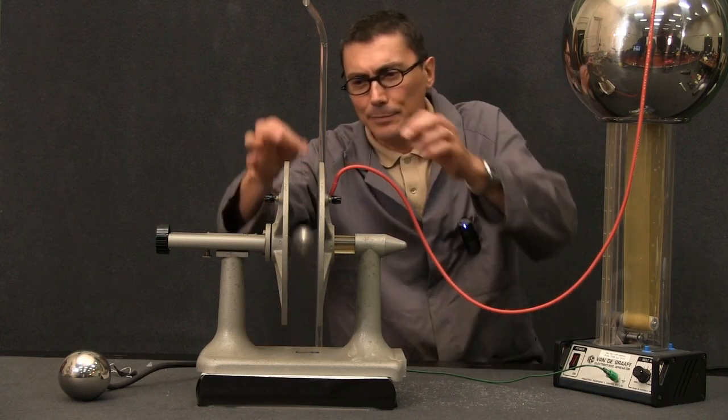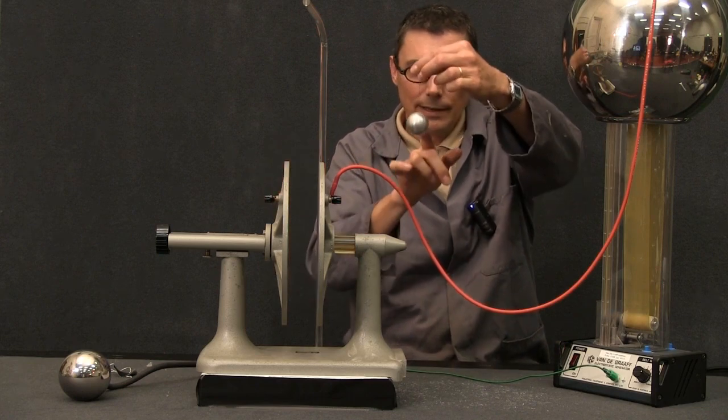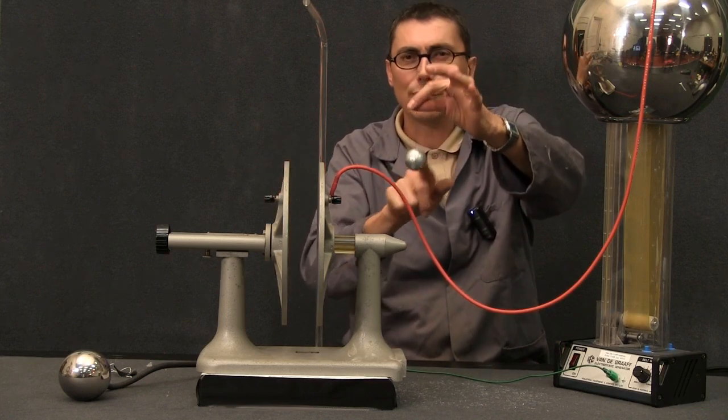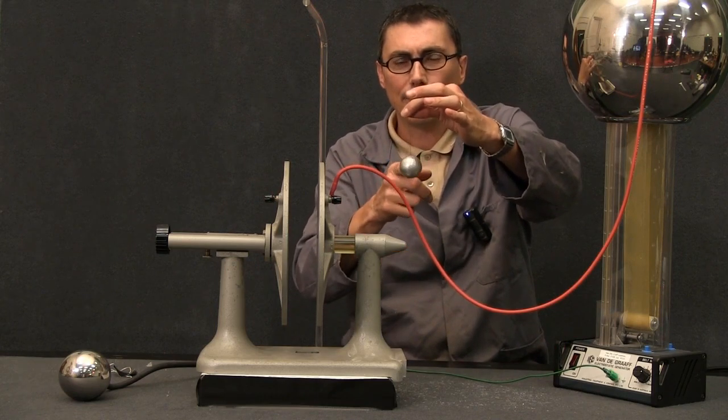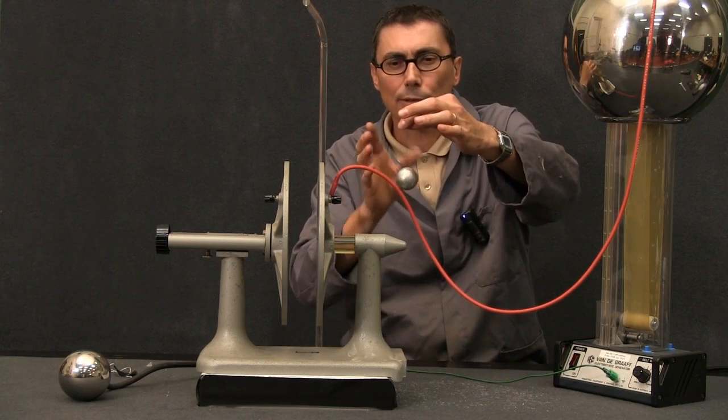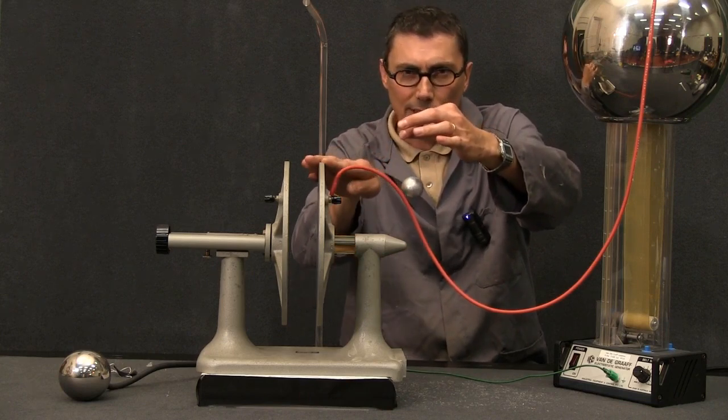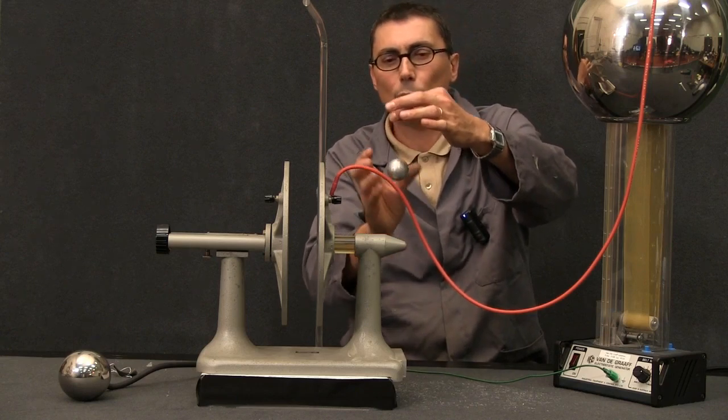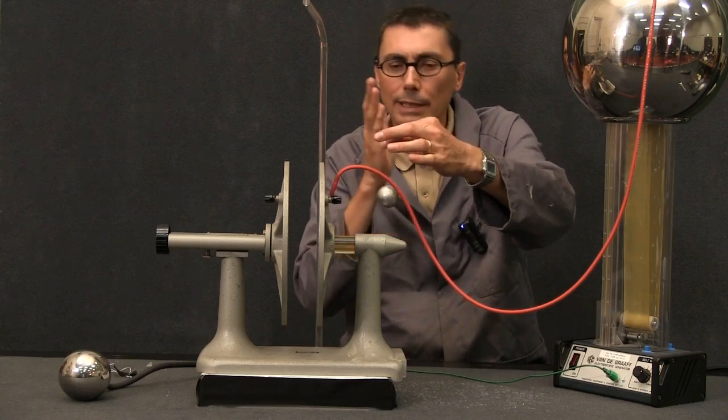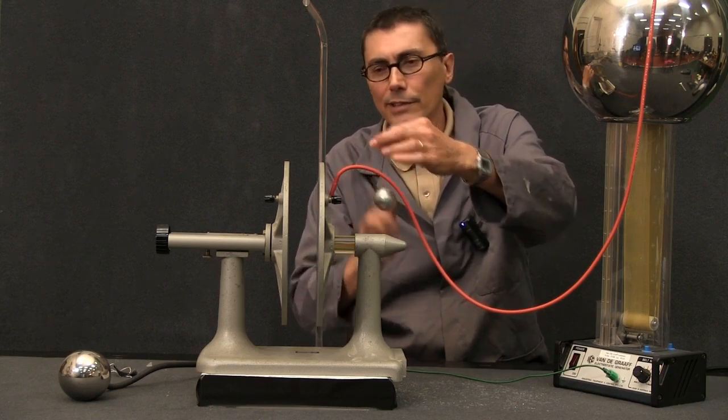What actually happened is that sitting in this field, the electrons originally were uniformly distributed around the sphere, but because it was sitting in an electric field, you tended to get, assuming this is the positive plate, then it would attract more electrons to the left hand side. So the ball would become slightly polarized. The closer side is slightly negative and the further side is slightly positive.